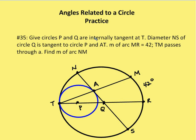Number 35: circles P and Q are internally tangent at T. Diameter NS of circle Q is tangent to circle P at A. TM passes through A. The measure of arc MR is 42 degrees. We need to find the measure of arc NM. Since an inscribed angle is half the measure of its intercepted arc, and arc MR is 42 degrees, angle ATQ equals 21 degrees.